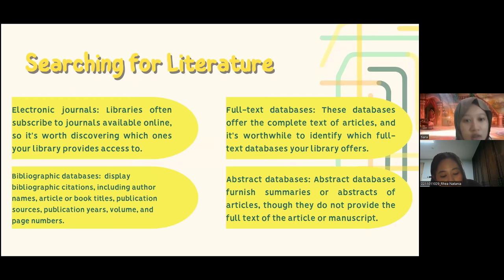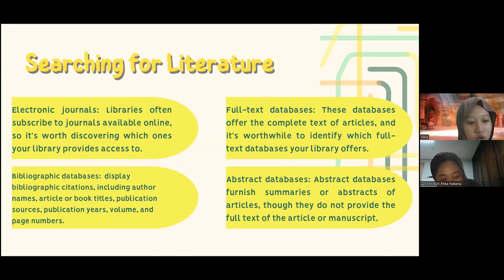When searching for literature, the first method is electronic journal databases — libraries often subscribe to journals available online, so it's worth discovering which ones your library provides access to. The second is bibliography databases, which display bibliographic citations including author names, article or book titles, publication sources, publication years, volume, and page numbers.